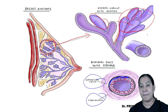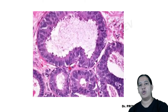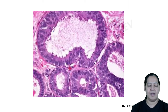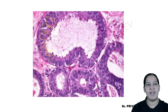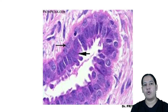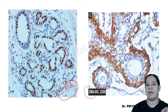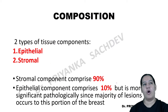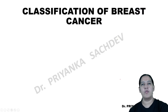All breast cancers occur in the epithelial component, not in the stroma. The inner lining epithelial component's IHC marker is EMA — you can highlight it using EMA. The outer layer's marker is SMA or S100. These are the IHC markers which highlight those particular layers. So that is the bilayered structure. Epithelial component and stromal component — stroma is 90%, epithelial is only 10%.